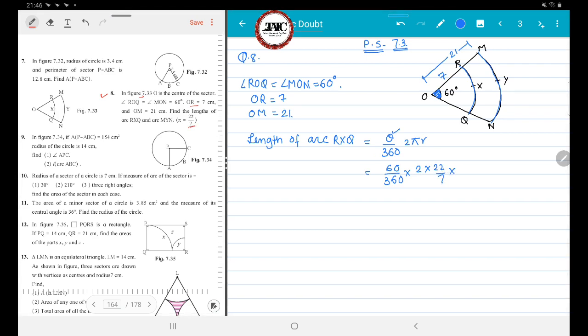Now see that we are talking about RXQ, isn't it? So RO is your radius. Now basic math: 0, 0 will get cancelled, 7, 7 will get cancelled, 6, 6 will get cancelled.